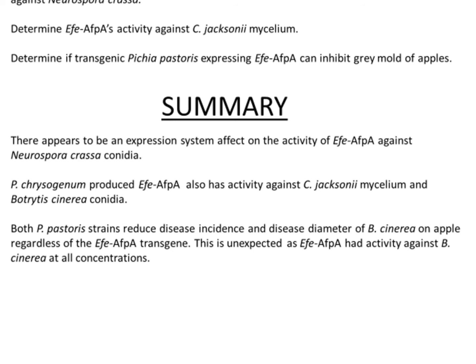To summarize: there appears to be an expression system effect on the activity of EFE-AFPA against Neurospora crassa conidia, with bacterial, yeast, and fungal systems showing varying inhibitions. We chose the Penicillium system as optimal because its inhibition profile closely matched PAF. Penicillium chrysogenum-produced EFE-AFPA has activity against Clarireadia jacksonii mycelium as shown by the Evans blue stain assay, and against Botrytis cinerea conidia as shown by the 96-well plate assay. While both Pichia pastoris strains reduced Botrytis cinerea infection and disease diameter on apples, there was no enhanced effect from our transgenic AFPA line, which is unexpected given AFPA's demonstrated activity against Botrytis cinerea at all concentrations.